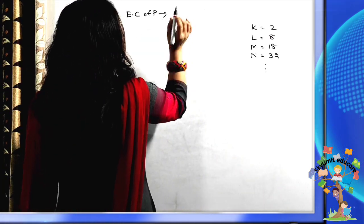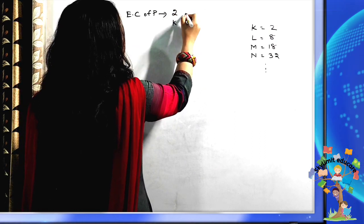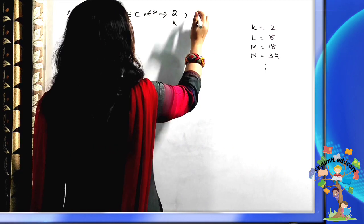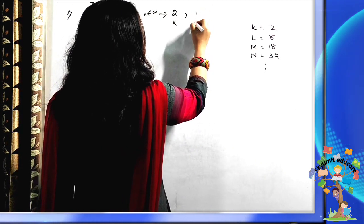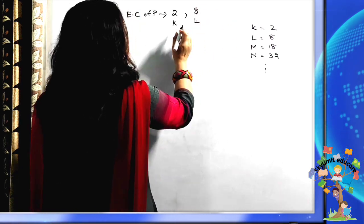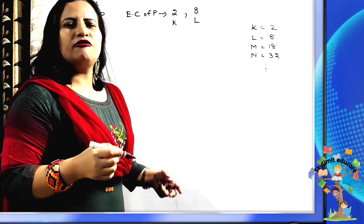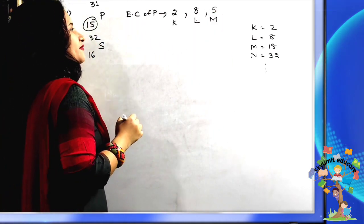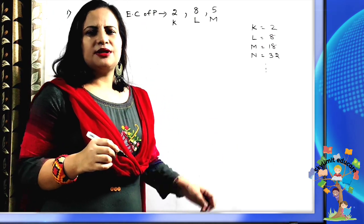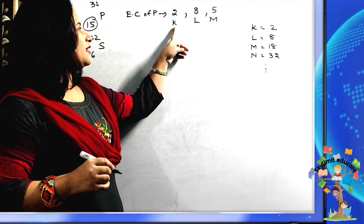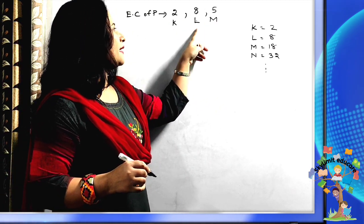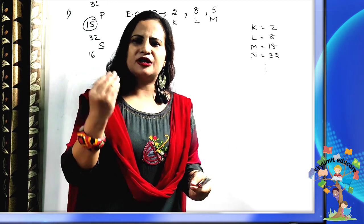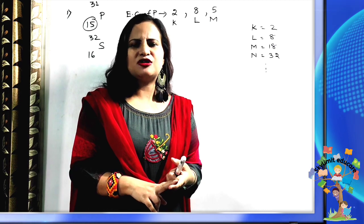So the electronic configuration of phosphorus is 2, 8, 5. Start filling from the K shell, then the L shell at maximum capacity, then the M shell with the remaining electrons. Each element has its own specific number of electrons, protons, and neutrons — no two elements have the same number.